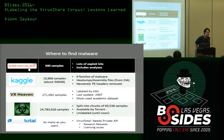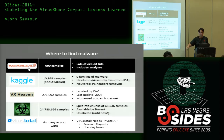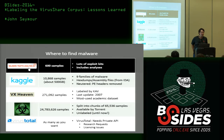The next dataset is VxHeaven, which has about an order of magnitude more samples than Kaggle. Each file in VxHeaven is named with Kaspersky's antivirus labels — for example, if Kaspersky labeled it a Trojan, it'll have Trojan and the hash in the file name. It's really well organized, but it was last updated in 2007, so things have changed a bit since XP was still alive. It's pretty stale, but it is the most used academic dataset.